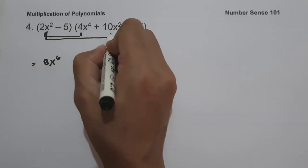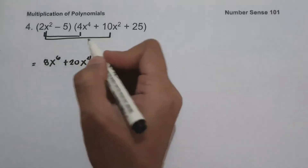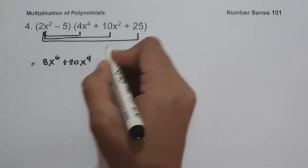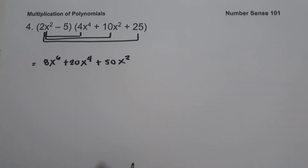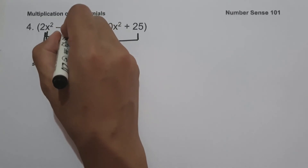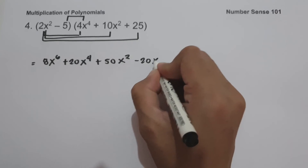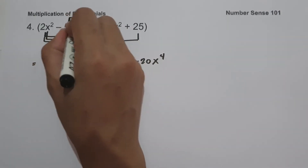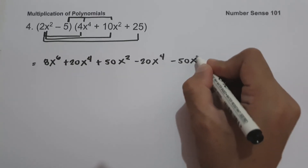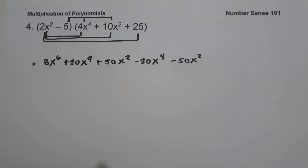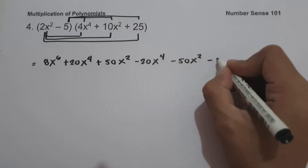2x squared multiplied by 10x squared is 20x raised to 4. 2x squared multiplied by 25 is 50x squared. Then negative 5 multiplied by 4x raised to 4 is negative 20x raised to 4. Negative 5 multiplied by 10x squared is negative 50x squared. And lastly, negative 5 multiplied by 25 is negative 125.